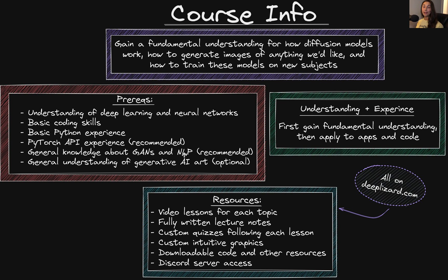In the GANs course, you'll be introduced to generative models in general and generative adversarial networks. Finally, if the concept of AI art is totally new to you and you haven't yet heard of models like Stable Diffusion, we recommend getting familiar with our AI art for beginners crash course. That course gives a good introduction to what AI art is, how it's generated, and how you can create your own AI art with diffusion models. A couple of these prerequisites are just recommended and one is optional, but the first three are required.